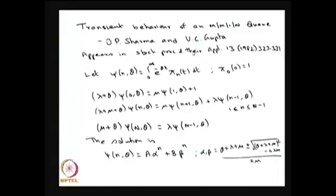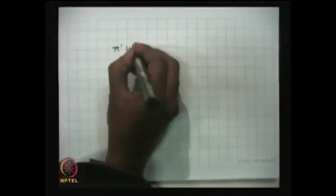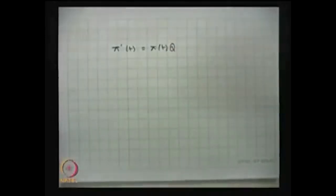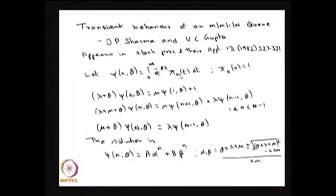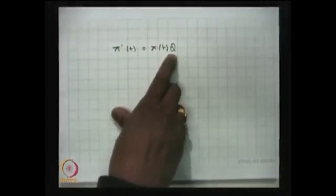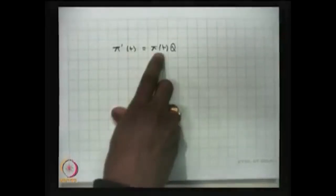So what does this method do? You start with the forward Kolmogorov equation: π'(t) = π(t) · Q, where π(t) is the probability vector, π'(t) is its derivative, and Q is the infinitesimal generator matrix. Then use the Laplace transform for each π_n(t). The vector π(t) represents the distribution of X(t), so it is a vector and Q is the matrix.